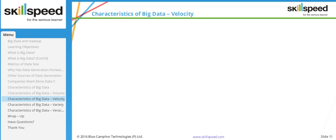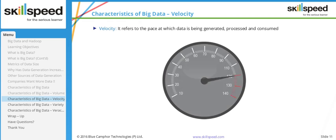The second characteristic is velocity, which refers to the speed at which data is being generated. For example, during a single flight, a Boeing airplane generates gigabytes of data within hours. You are not given a time frame where you can sit, relax, capture, and then analyze the data. The velocity — the speed at which data is generated, transmitted, and captured — is really high. Think about Facebook as well: the speed of content generation is high, with terabytes arriving every hour.